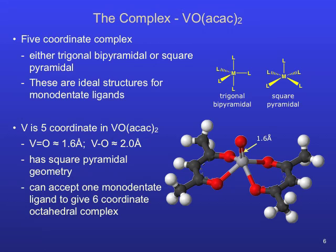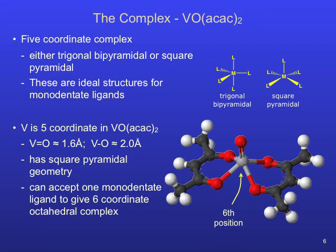The axial V-O bond length is much shorter than the V-O bonds involving the ac-ac ligands. This shorter distance strongly implies multiple bond character for this axial bond, and the vanadium ion is positioned above the geometric plane formed by the four oxygen atoms in the ac-ac ligands. The coordinating position opposite the axial V-O bond is vacant and can accept one monodentate ligand to form a six-coordinate complex.